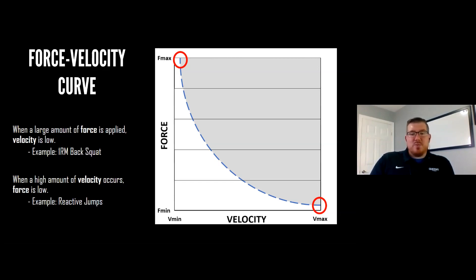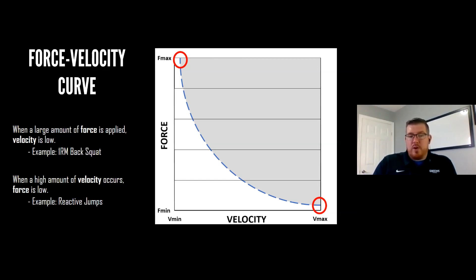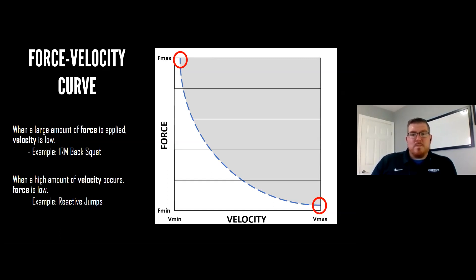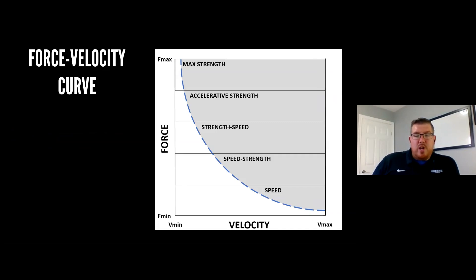Alternatively, when velocity is really high, force output is really low. An example would be reactive pogo jumps, skipping, or sprinting — velocity output is really fast and force output is low. In a perfect world every athlete would have the ability to output a similar ratio of force and velocity to create power, but we know that's not always the case.